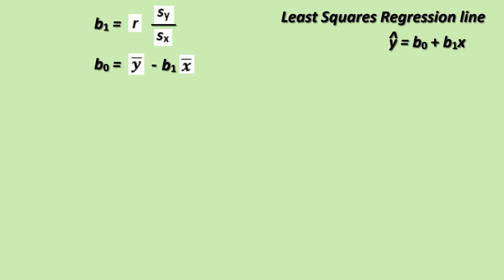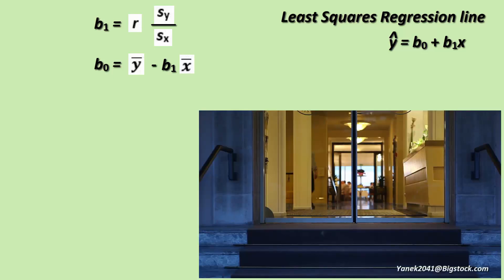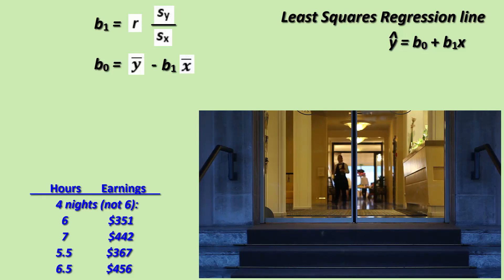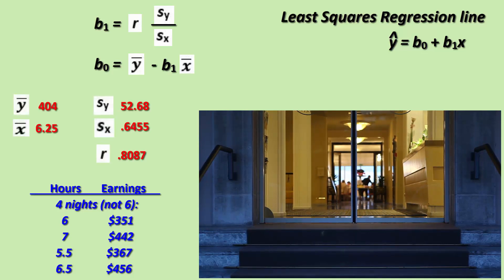Megan is a junior in college and she's been working in the restaurant industry during college to help pay for expenses. This year she's waiting tables Fridays and Saturdays at one of the finest restaurants in town. Using her total earnings from her first six nights of work, she's wanted to find the least squares regression line to predict earnings for future shifts. Here's a table of her shifts including hours worked and total earnings, and here's the statistics from the six shifts.